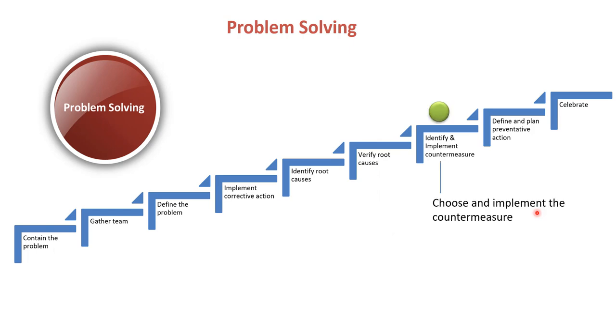And then you identify and implement countermeasures. You choose the countermeasure that you're going to implement, implement the countermeasure, and then make sure that that countermeasure is doing what it's supposed to be doing and you're not seeing any more escapes.